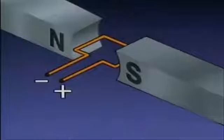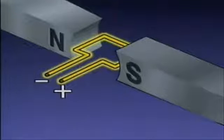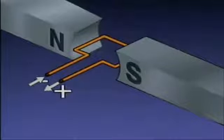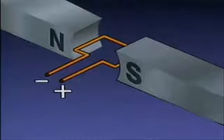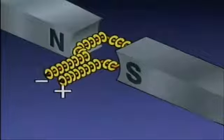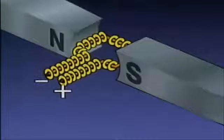The interaction between the magnetic fields can be used to create rotary motion in a motor. In this illustration, a loop of wire is positioned in the magnetic field created by two permanent magnets. The loop is connected to a source of direct current, or DC power. Current flows from the negative side of the DC power source through the loop to the positive side.